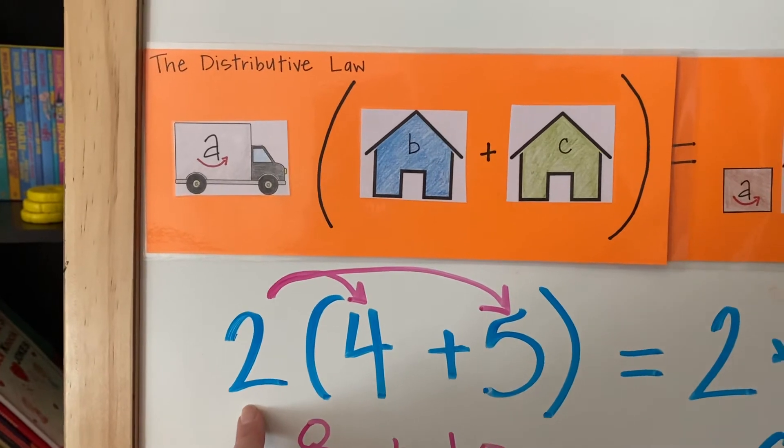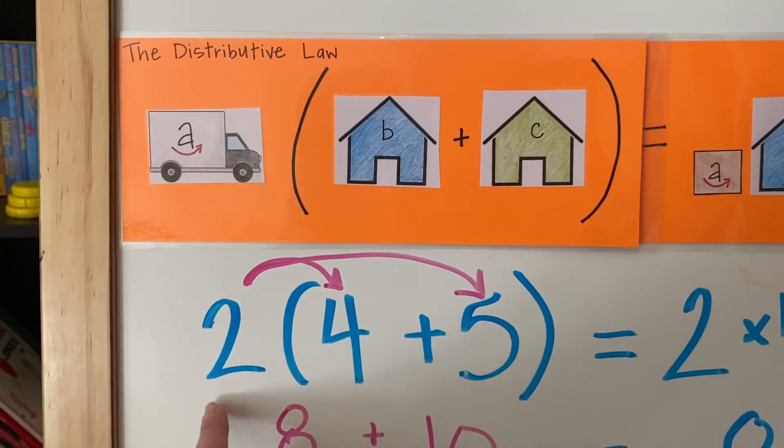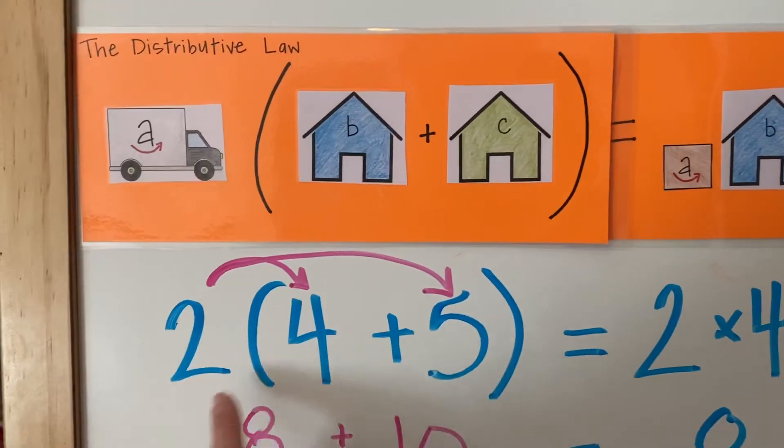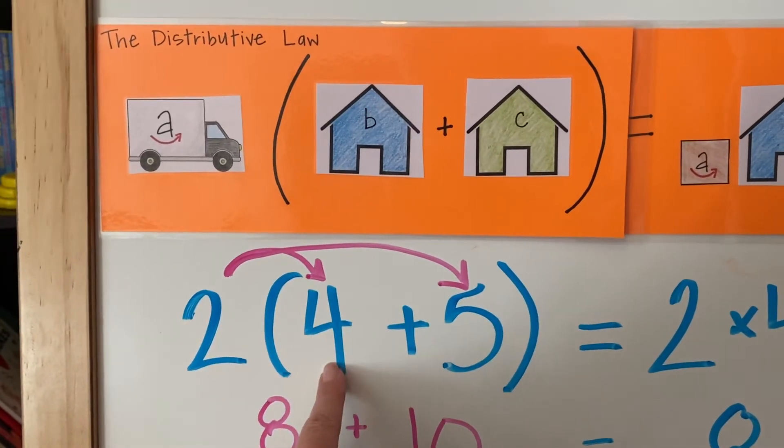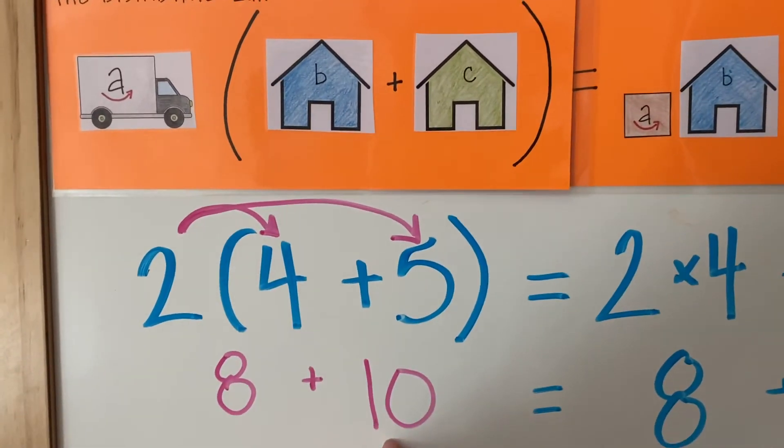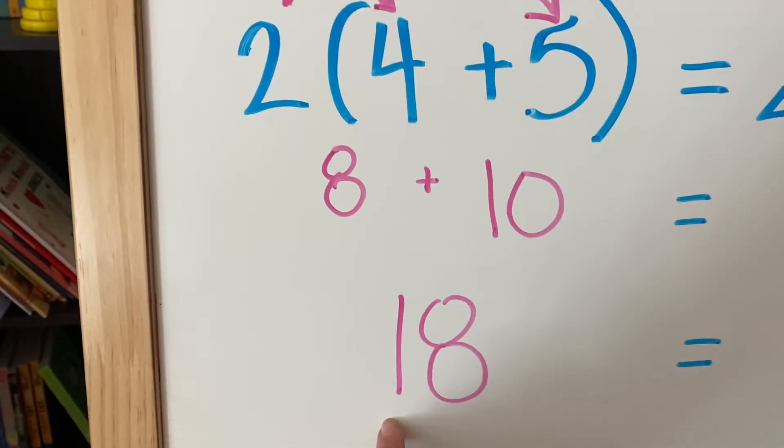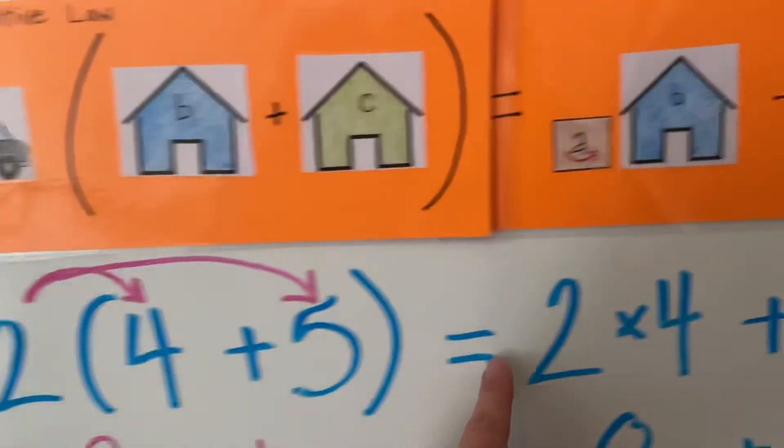a is our distribution truck, so we're going to distribute a to 4 first and then a to c. So 2 times 4 is 8, 2 times 5 is 10, 8 plus 10 is 18. Let's see if it checks out over here.